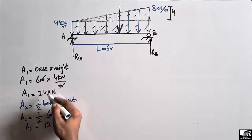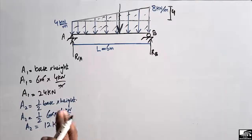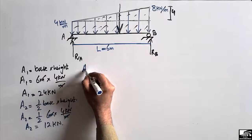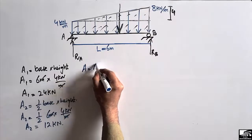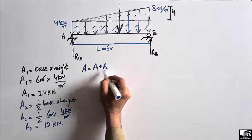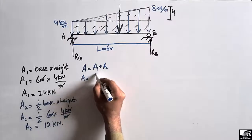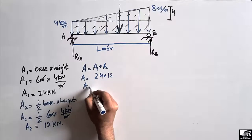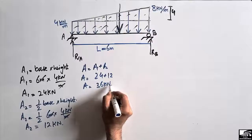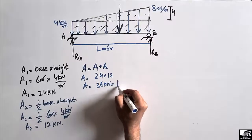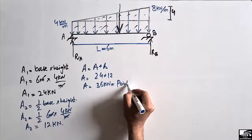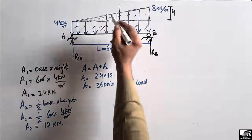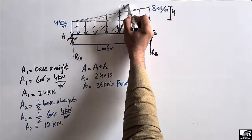Now we add these two loads to find the total load. Total area = A1 + A2 = 24 + 12 = 36 kN. This total area represents the total concentrated load, so the magnitude of the total load is 36 kN.